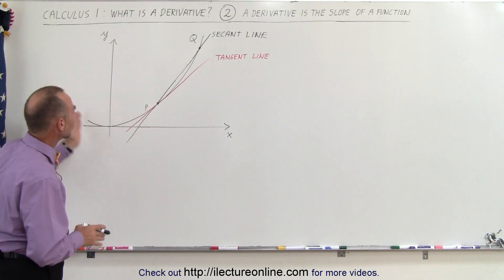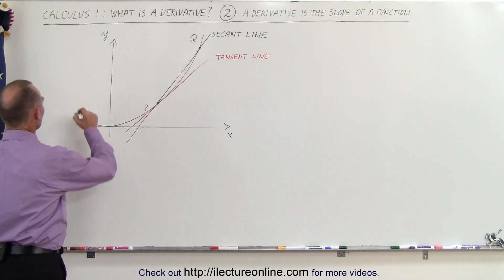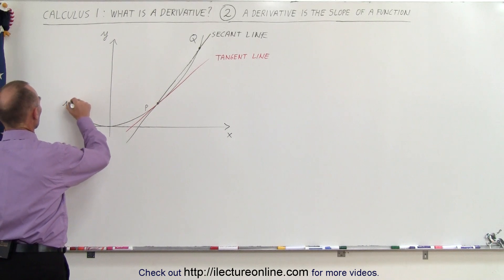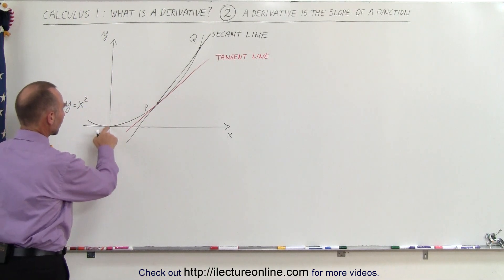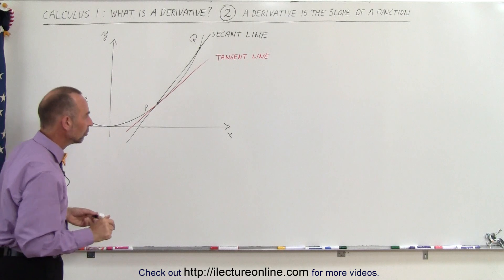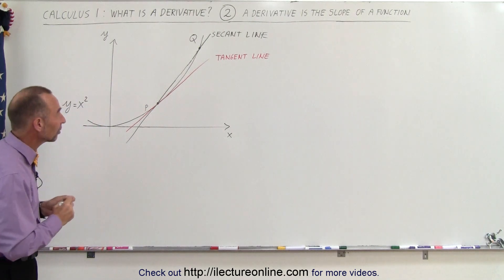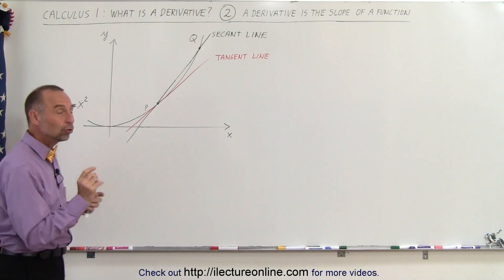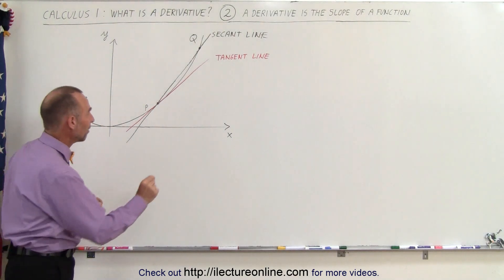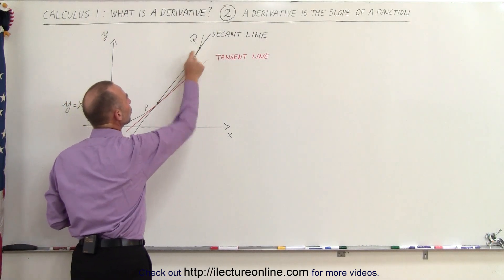Here I have a quadratic equation. Let's say that the function is y equals x squared. Of course, the vertex here is at the origin, the 0,0 point on the x,y axis. And you can see that I picked two points on the graph, point p and point q.